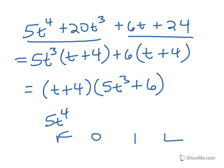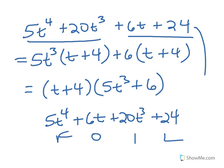Does that work? Is that going to get us back to where we started? There's always an easy way to check—use your FOIL method. The first numbers multiplied together: t times 5t cubed is 5t to the fourth. Your outside numbers: t times 6 is 6t. Your inside numbers: 4 times 5t cubed is 20t cubed, and 4 times 6 is 24.